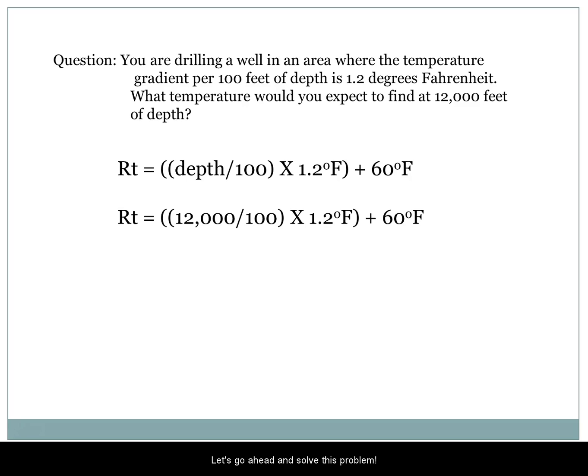Let's go ahead and solve this problem. Reservoir temperature equals 12,000 (the true vertical depth of our well) divided by 100, times 1.2 degrees Fahrenheit, plus 60 degrees Fahrenheit. So our answer would be 120 - there's 120 100-foot sections in our well. We multiply that by 1.2 degrees Fahrenheit and then add 60 degrees Fahrenheit of ambient temperature.